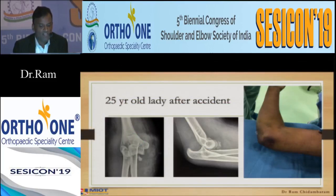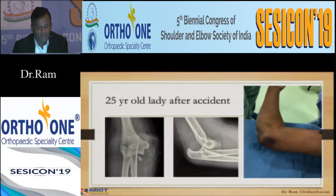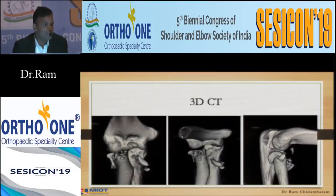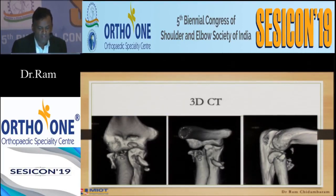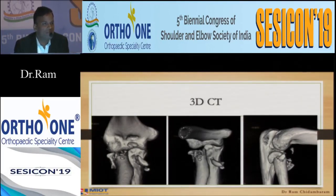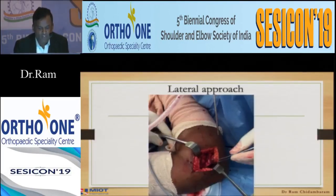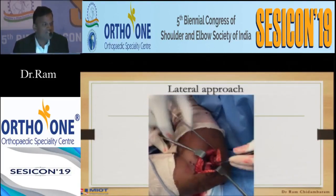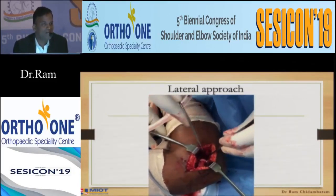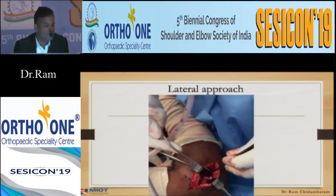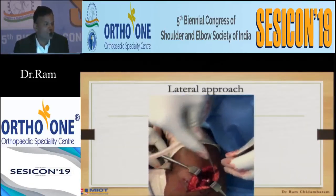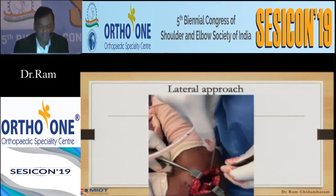Another case: a 25-year-old lady after an accident, operated one month ago — again a terrible triad. On 3D CT, the radial head is not fixable because it is smashed; if you fix it you would not have stability to rotate it. Lateral approach. As soon as I put the skin incision, I could see the bare lateral condyle — LCL, LUCL, everything is torn off from the distal humerus. Radial head fragments were everywhere, so here I used a radial head replacement. You must use the correct size and not overstuff.